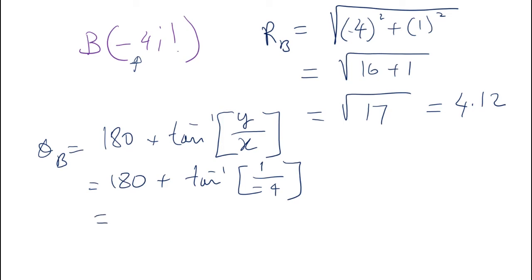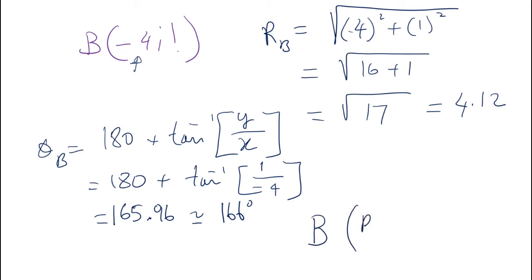I found 165.196, or you can just put 166 degrees. So the polar coordinate of B will be R_B = 4.12 and theta_B = 166 degrees. This is how we do it.